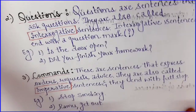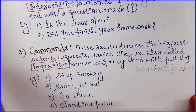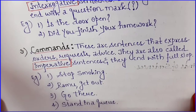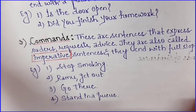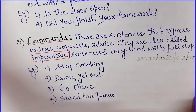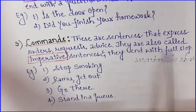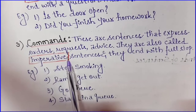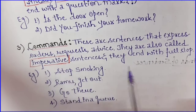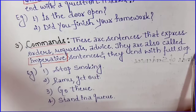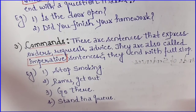Coming to the third type of sentences, we have commands. Commands are sentences that express orders, requests, and advice. They are also called imperative sentences — commands ko hum imperative sentences bhi kehte hain. And they also end with a full stop, just like statements.